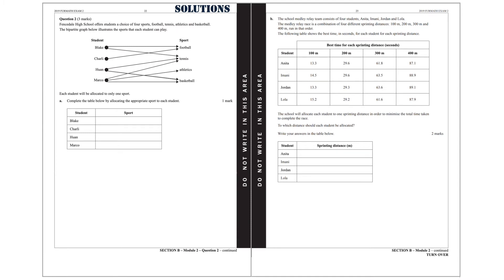Question 2. Vansdale High School offers students a choice of four sports: football, tennis, athletics and basketball. The bipartite graph below illustrates the sports that each student can play. Each student will be allocated to only one sport. Part A. Complete the table below by allocating the appropriate sport to each student.